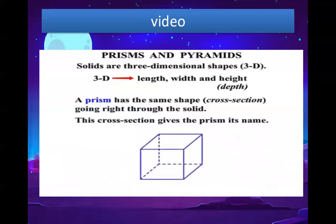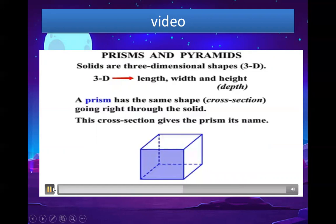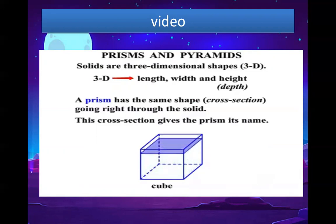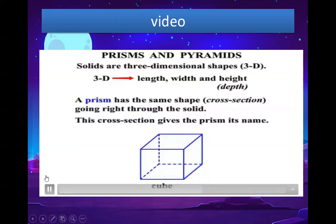Now this particular one looks like it's got squares rather than just rectangles — that square going right through the solid. If that's the case, it's a cube. That square needs to go right through from the top to the bottom as well, and also the same square going from one side right through to the other side. So that's known as a cube.